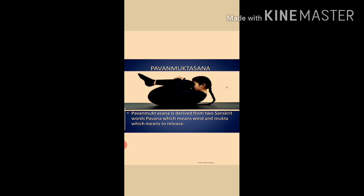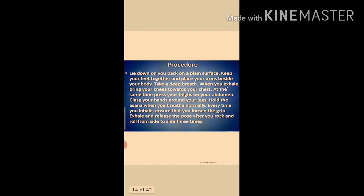Procedure of Pavanamuktasana: Lie down straight. Rest the right knee on the chest and interlock both hands, keeping them on the knee. While exhaling, press the knee to rest it on the chest. While lifting the leg, touch the knee with the nose. Remain in this position for about 10 to 30 seconds. While slowly inhaling, return to the base position and relax.